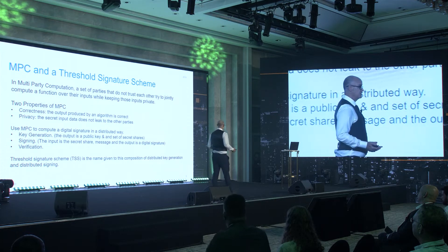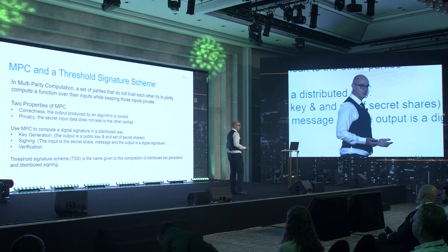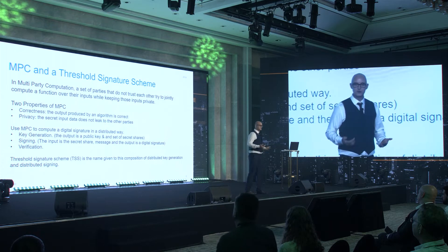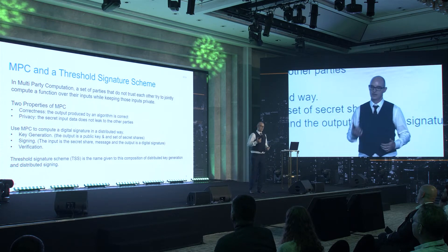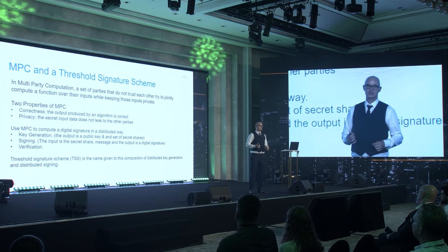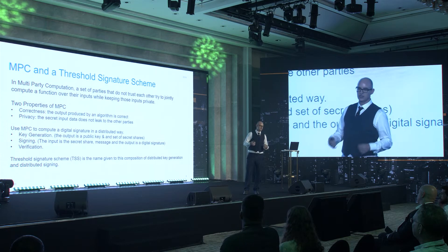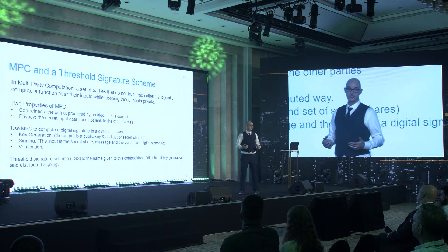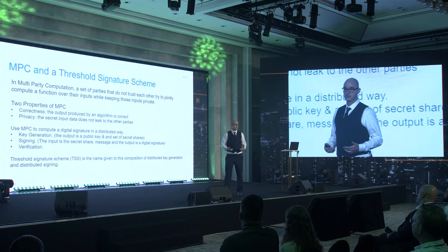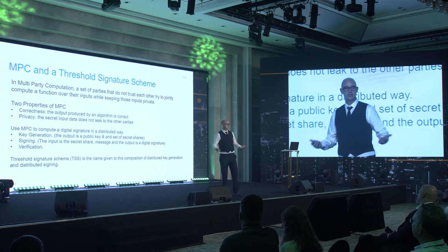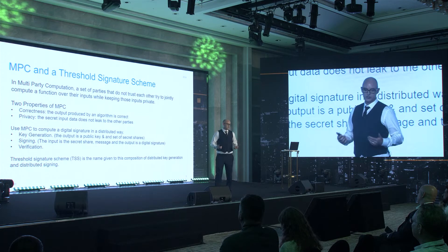There are many properties of an MPC. The two most important ones are correctness and privacy. Correctness, from the point of view that if you take some input, you get the correct and expected output from your algorithm. And privacy — you reveal no secrets. You only reveal what you want to reveal.